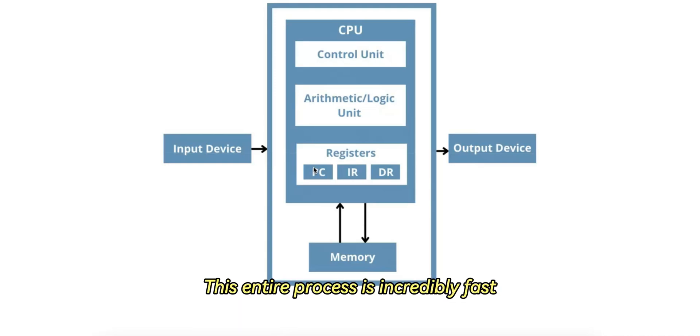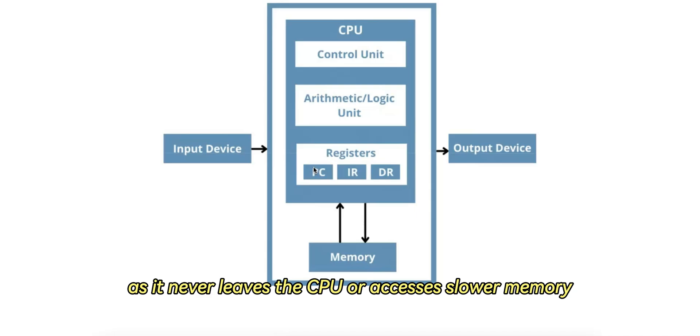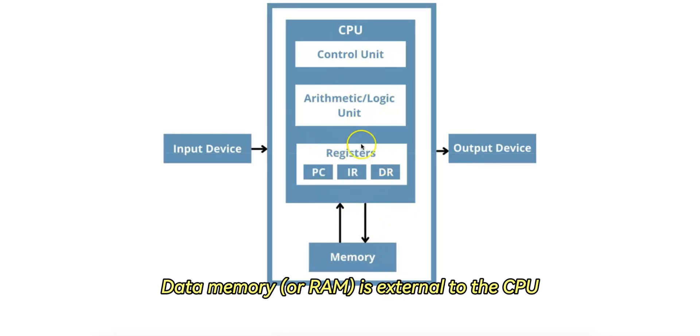This entire process is incredibly fast, as it never leaves the CPU or accesses slower memory. Data memory, or RAM, is external to the CPU. Accessing RAM is slower compared to registers, typically taking anywhere from 100 to several hundred CPU clock cycles, due to the time it takes to send signals between the CPU and the RAM.